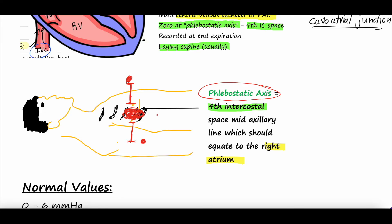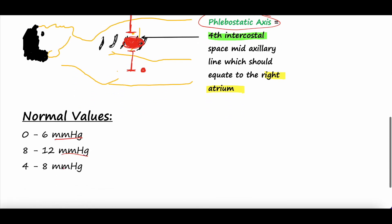So now you have a central line in the subclavian or internal jugular vein, its tip at the cavo-atrial junction, the patient lying flat, zeroed at the phlebostatic axis at the fourth intercostal space right at the right atrium. You get a measurement. CVP is measured in millimeters of mercury, like any pressure. Normal values vary across resources — some say 0 to 6, some say 8 to 12 — but we generally consider a normal CVP to be around 4 to 8 mmHg.